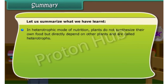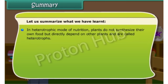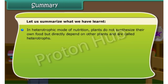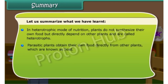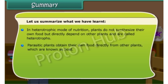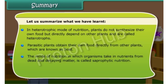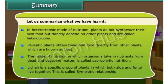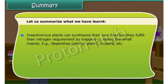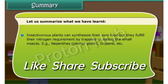In heterotrophic mode of nutrition, plants do not synthesize their own food but directly depend on other plants, and are called heterotrophs. Parasitic plants obtain food directly from other plants known as the host. The mode of nutrition in which organisms take nutrients from dead and decaying matter is called saprophytic nutrition. Lichen is a symbiotic relationship where algae and fungi live together. Insectivorous plants can synthesize their own food but fulfill their nitrogen requirement by trapping small insects. Thank you.